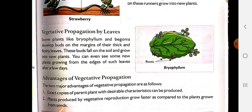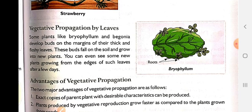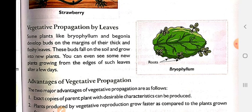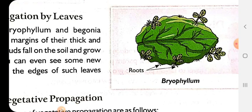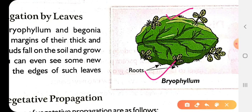Next comes another way of vegetative propagation — that is growing a new plant from the leaves. Leaves can also be used to grow a new plant, as in the case of bryophyllum, which we call 'pathar chet.' If we place its leaves in soil, we can also grow it into a new plant.